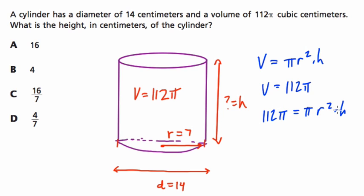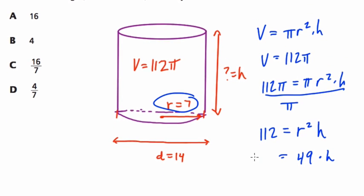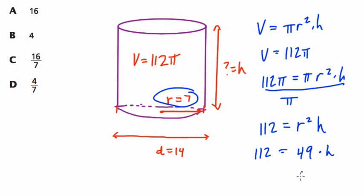I'm going to divide both sides by π. What does that get? Well, 112 times π divided by π, that's 112. And then π times radius squared times height, then divide it back by π, it's just radius squared times height. We know the radius. It's 7. So 7 squared is 49. So 49 times h is equal to 112. And then h would equal 112 divided by 49.